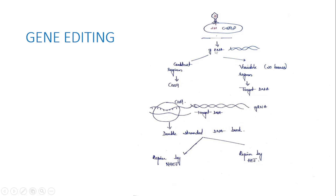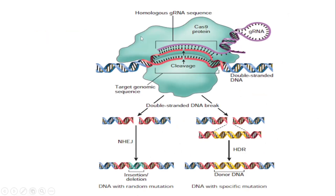The guide RNA (gRNA) has two regions: a constant region that binds to the Cas9 complex, and a variable region that binds to target DNA. When the Cas9 complex binds the gRNA, double-stranded DNA breaks occur, leading to destruction of the invading DNA. For gene editing, a target genomic double-stranded DNA sequence is combined with a guide RNA and Cas9 protein. The Cas9 protein attaches to the target and introduces a double-stranded DNA break, which is then repaired.